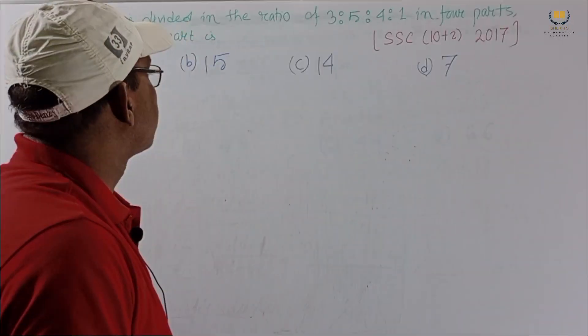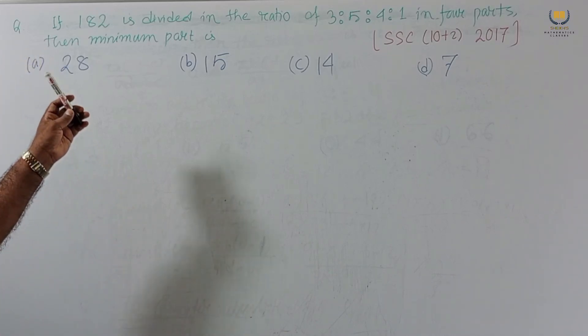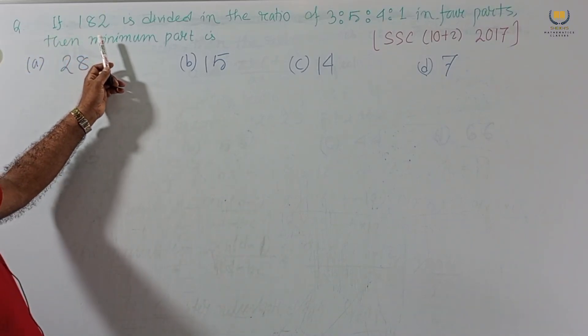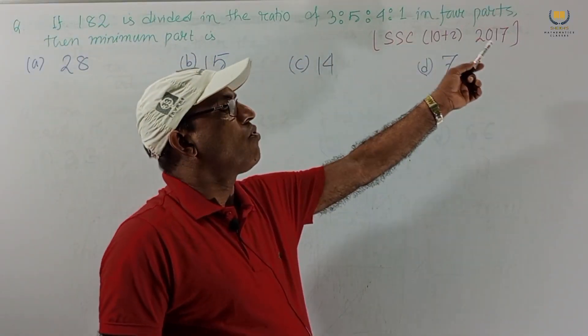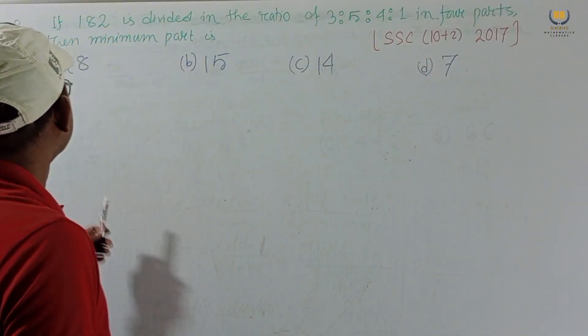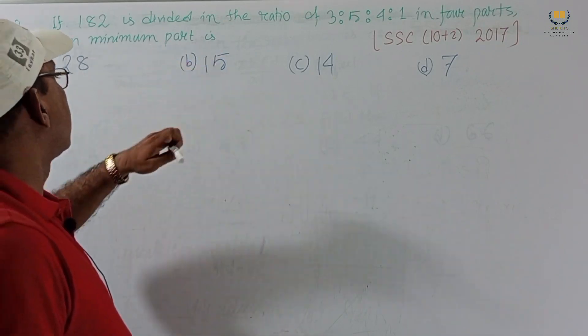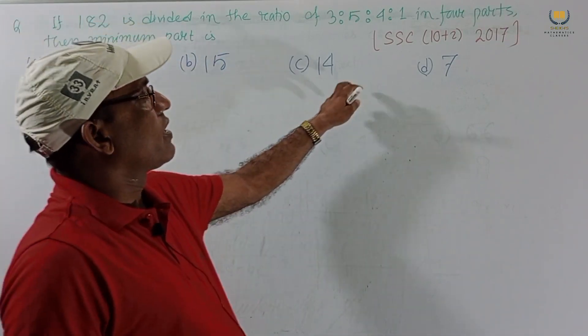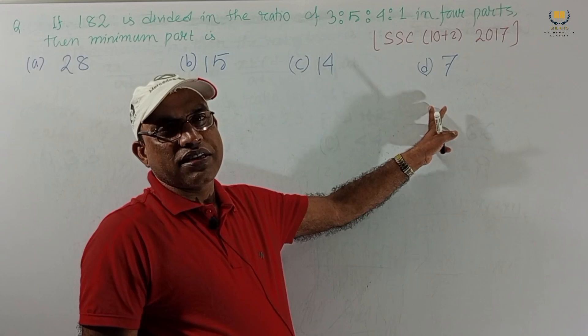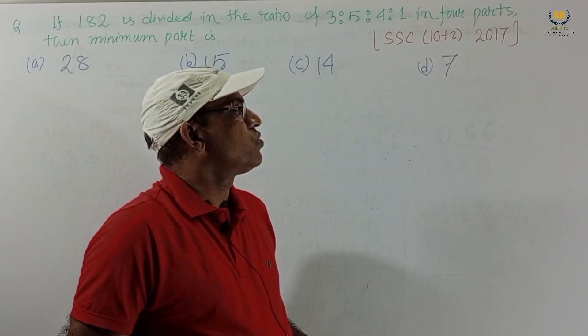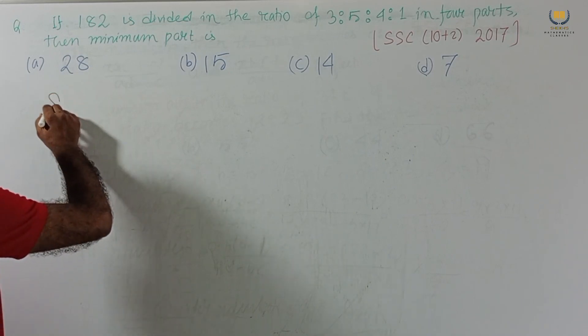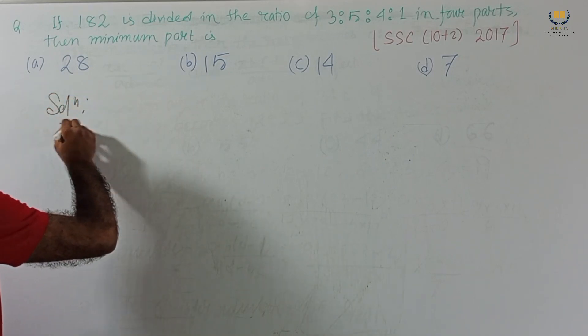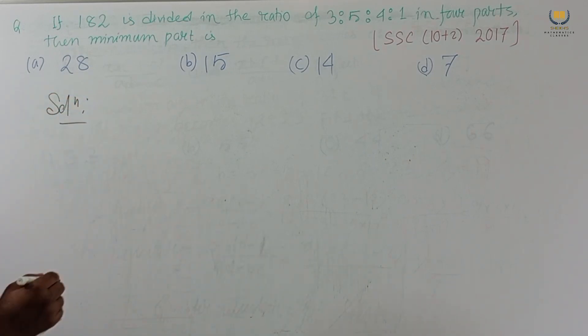Another interesting problem and very easy problem. If 182 is divided in the ratio of 3:5:4:1 in 4 parts. Then minimum part is 28, 15, 14, 7. It was asked in SSC 10 plus 2, 2017. Solution is that we can write directly.